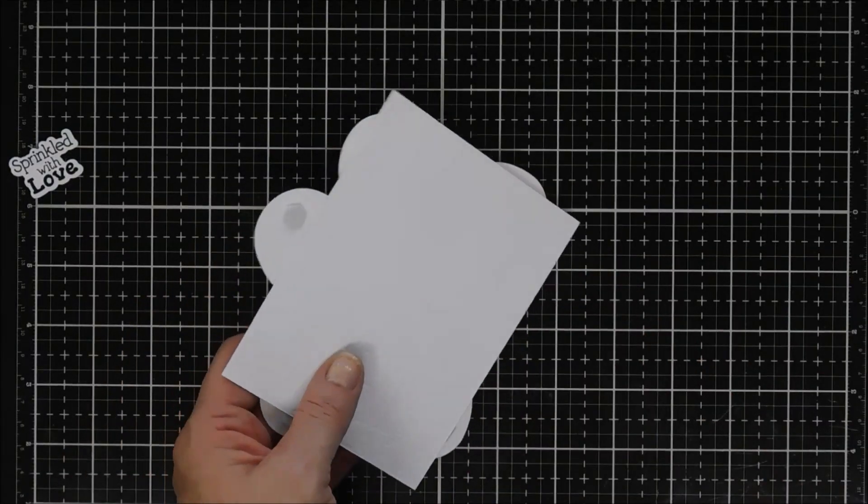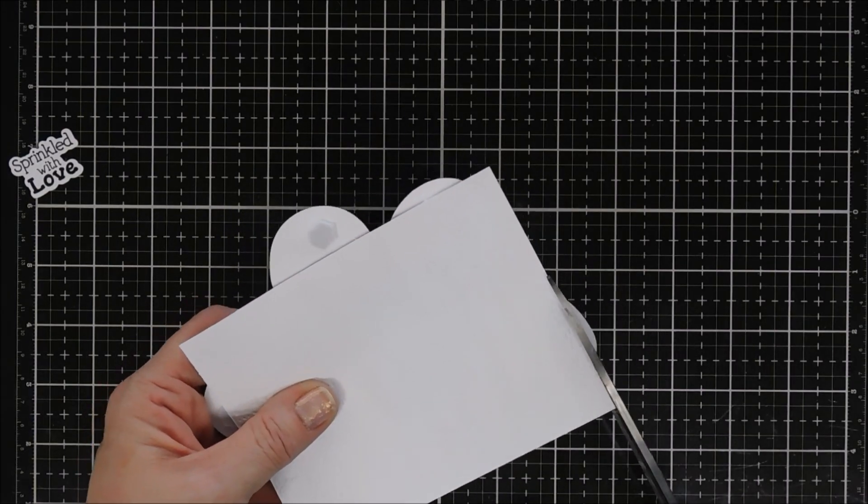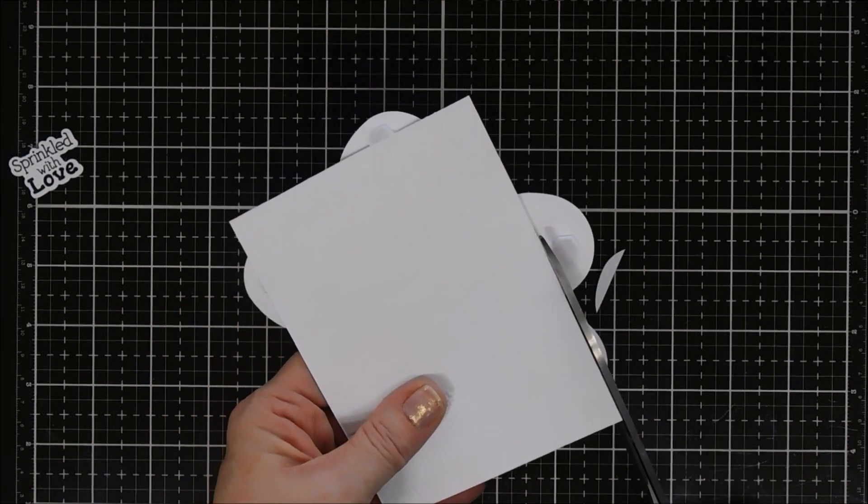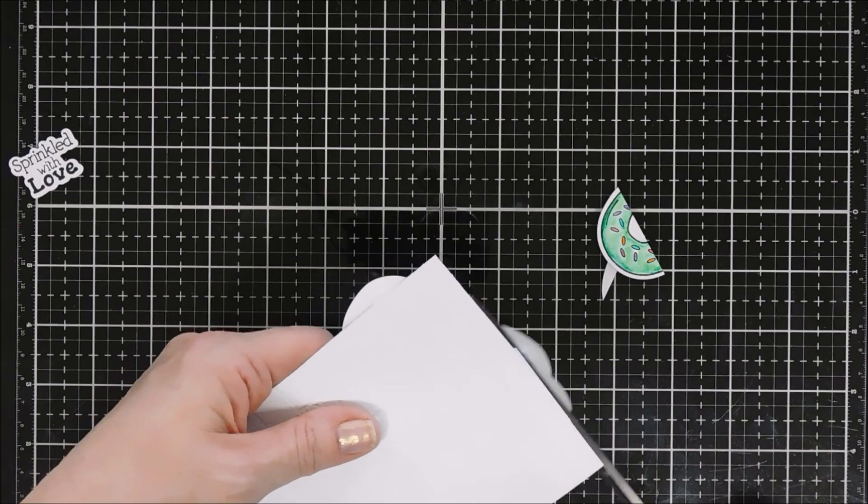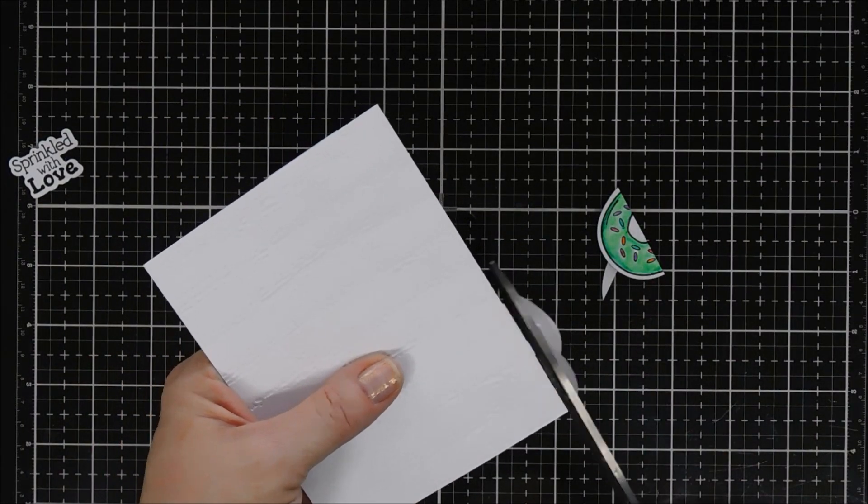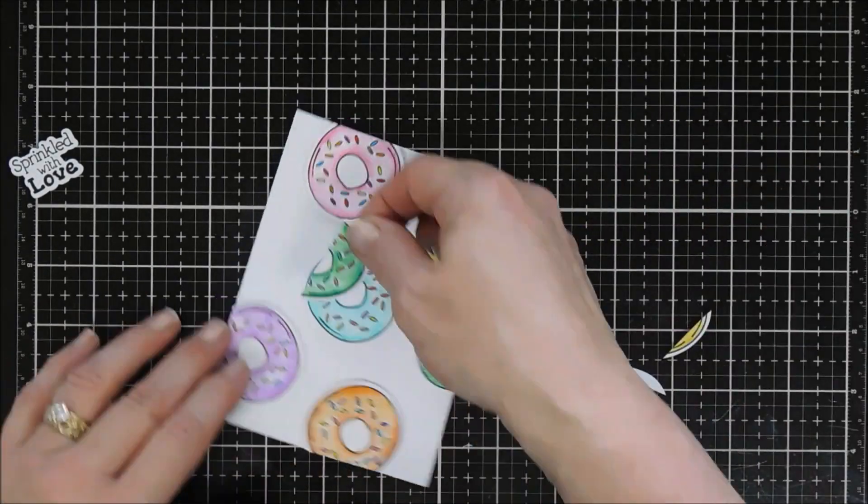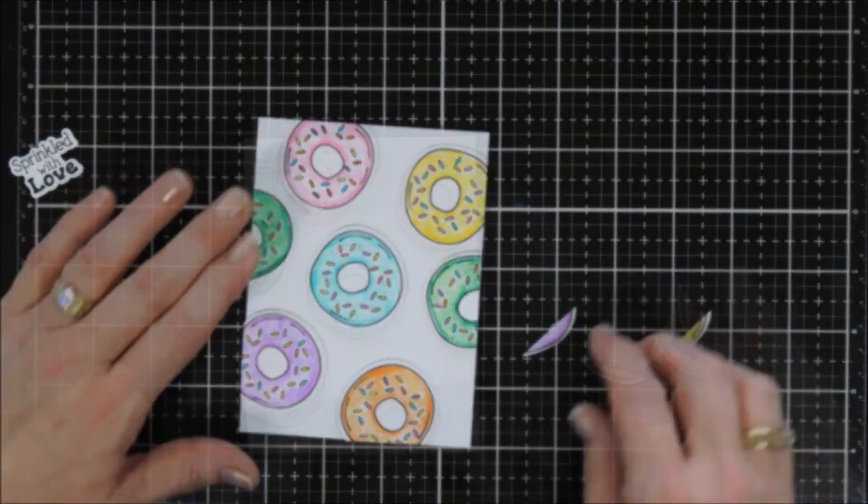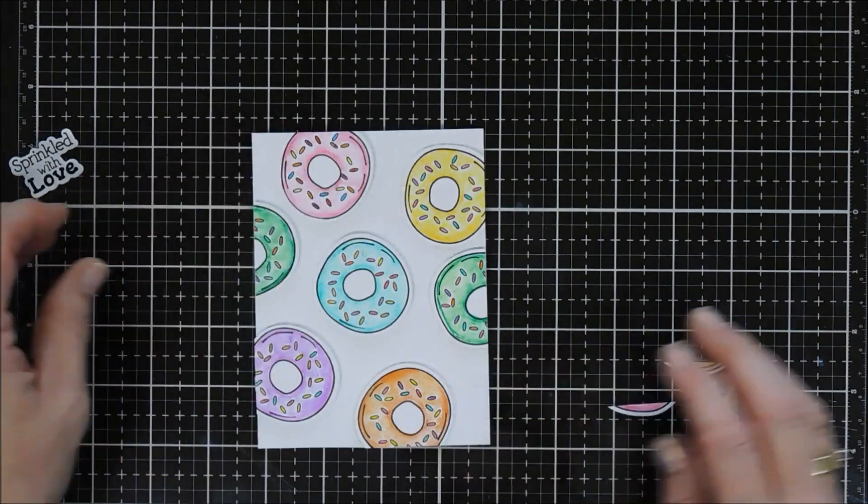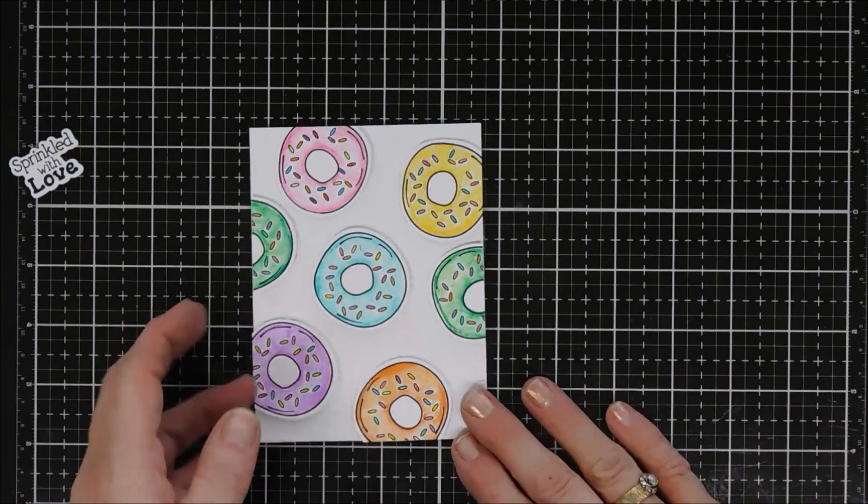You can see I overlapped some of the donuts. I did that intentionally. I just want to trim off the excess, and then that leftover green piece that I trimmed off will fit on that open area on the left of my panel. A great way to use up your little bits and pieces of trimmed donuts.